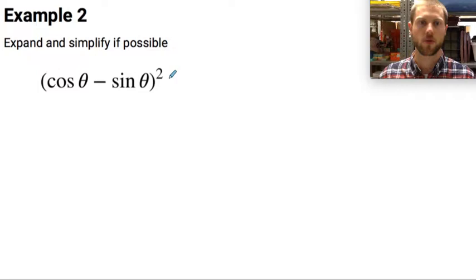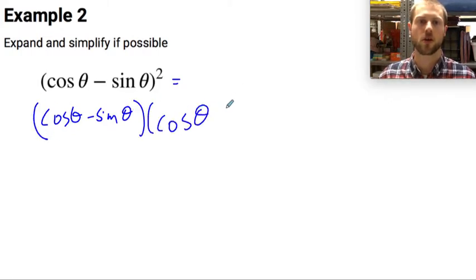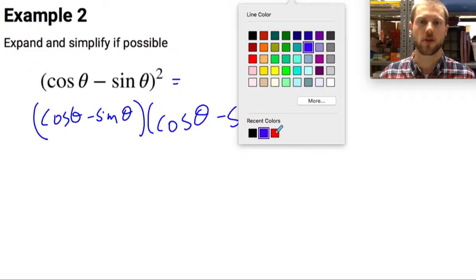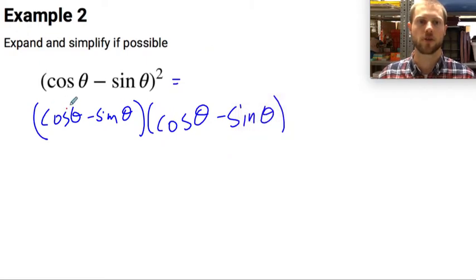The way I'm going to do that is I'm going to remember that this is the same thing as cosine of theta minus sine of theta times itself, since I'm squaring it. So I can multiply this just like I can multiply x's and y's and numbers. I'm going to double distribute.